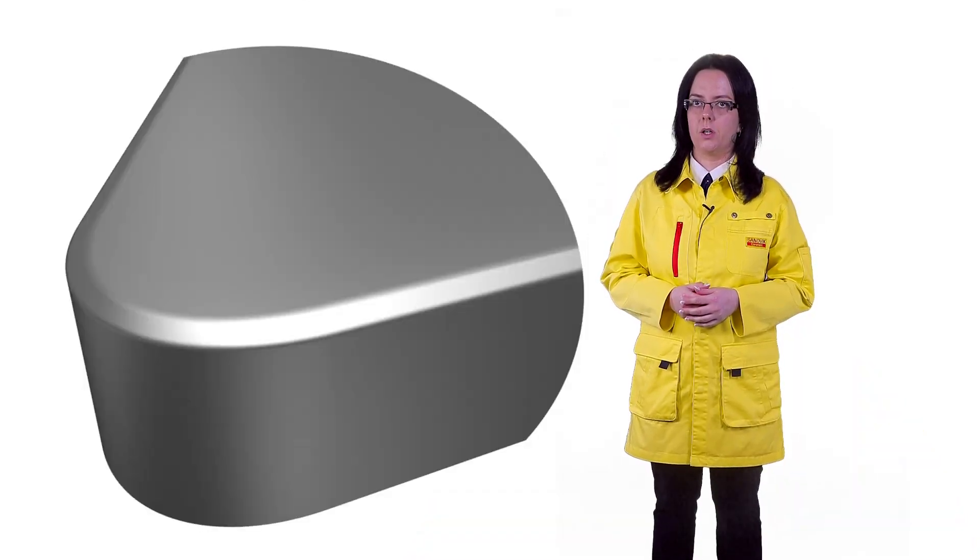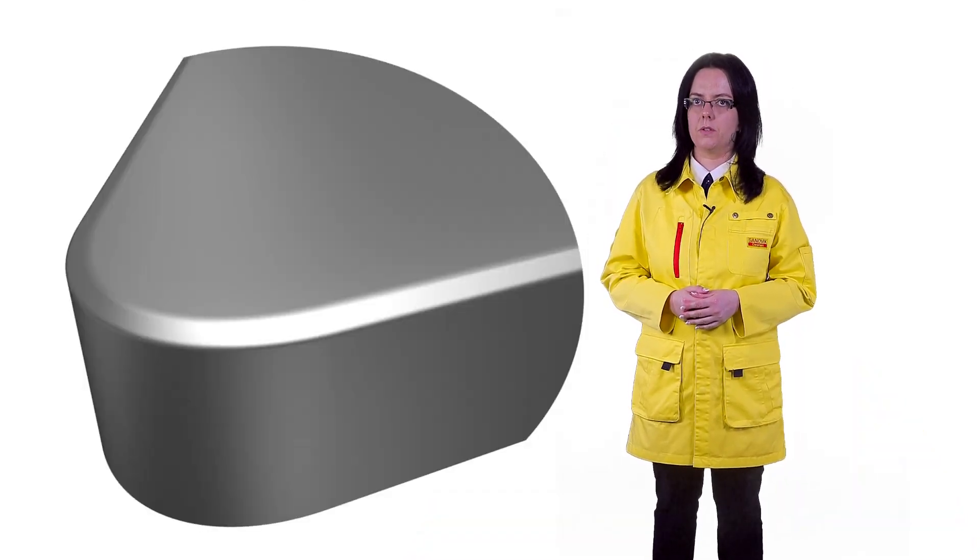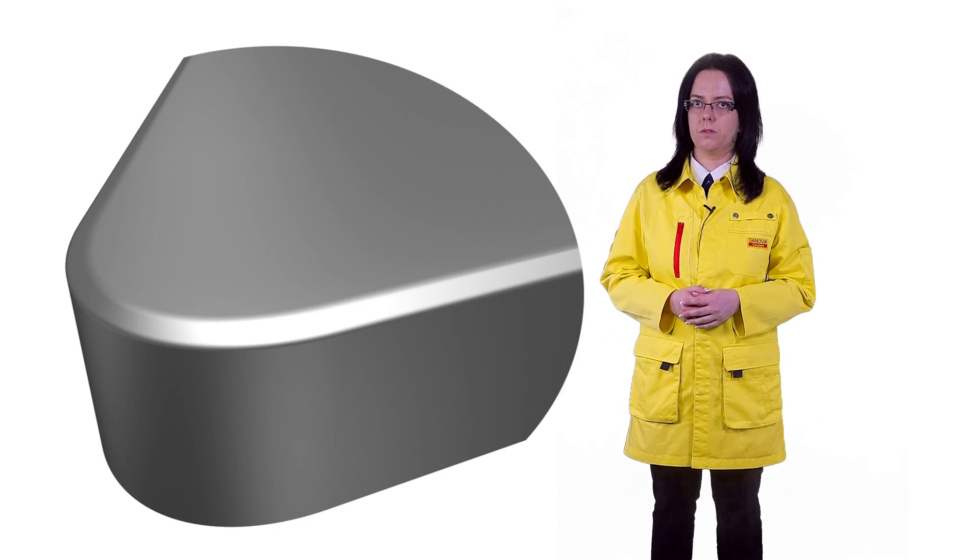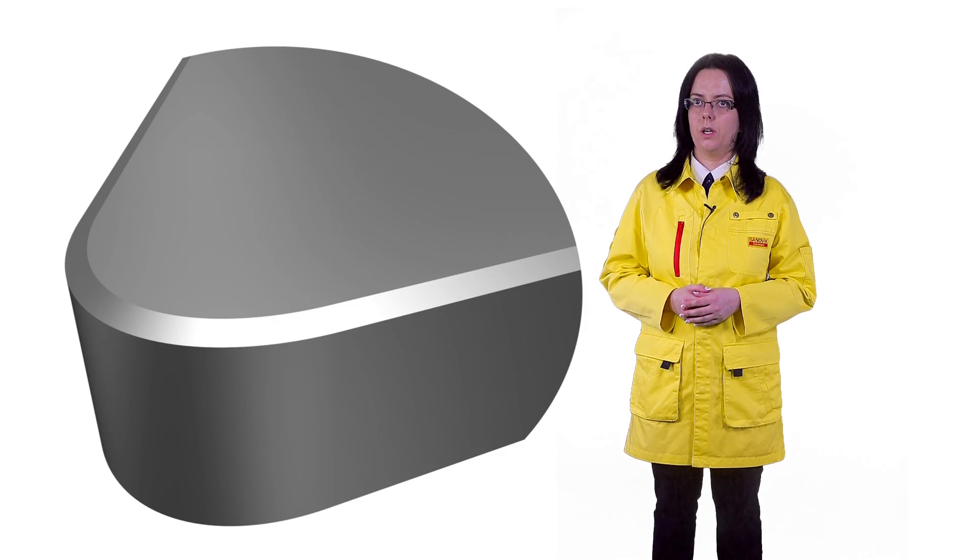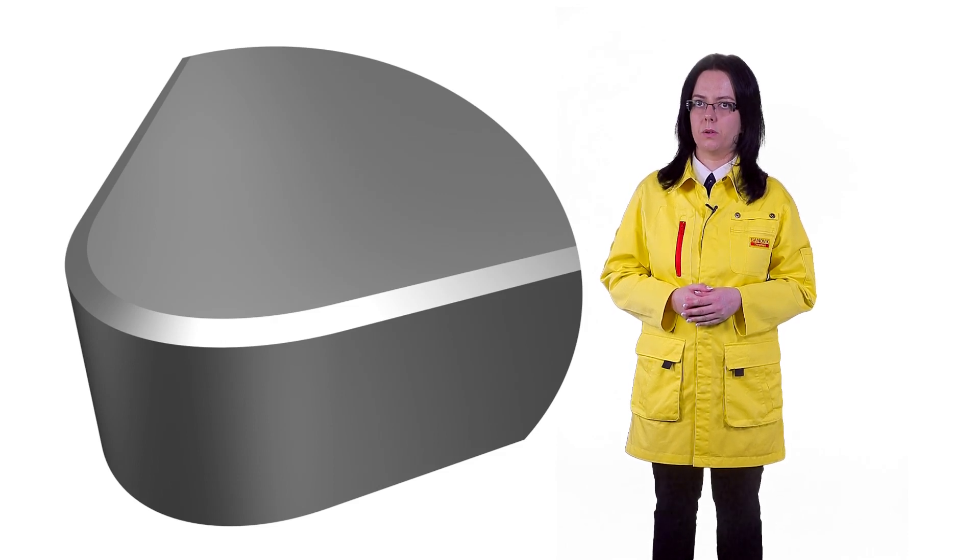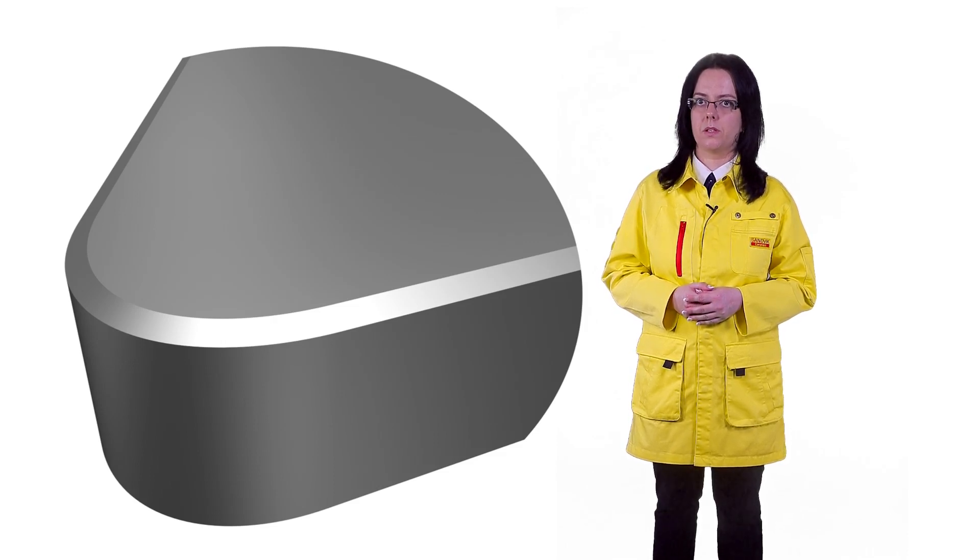The S-Land has a honed cutting edge, which gives consistent and predictable tool life. A T-Land, which doesn't have the edge honed, can be used to reduce cutting forces and when tight tolerances are required.